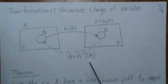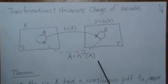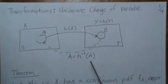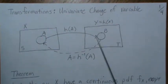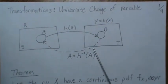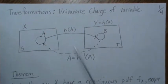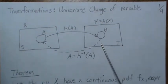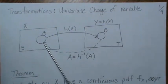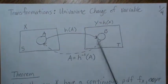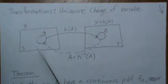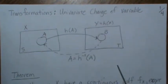The inverse image becomes important in variable transformation. When you assume it's a one-to-one transformation, then the inverse image can be called an inverse function, because one element goes to one element and vice versa.